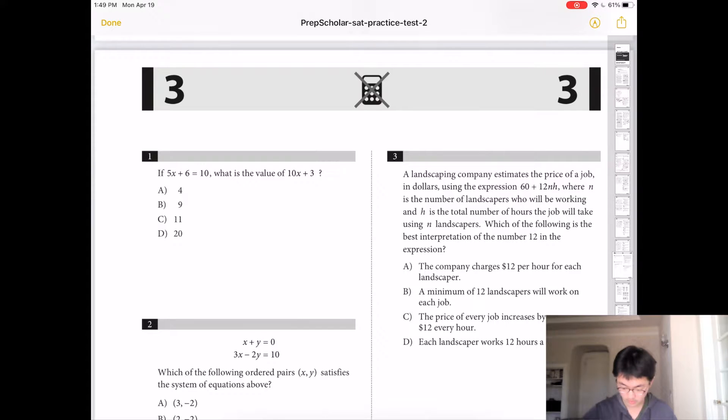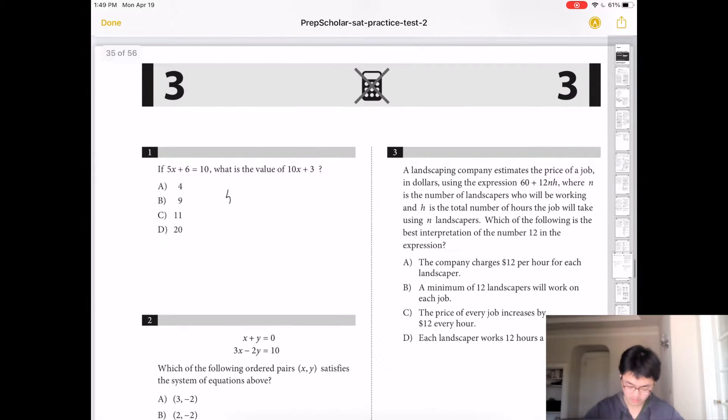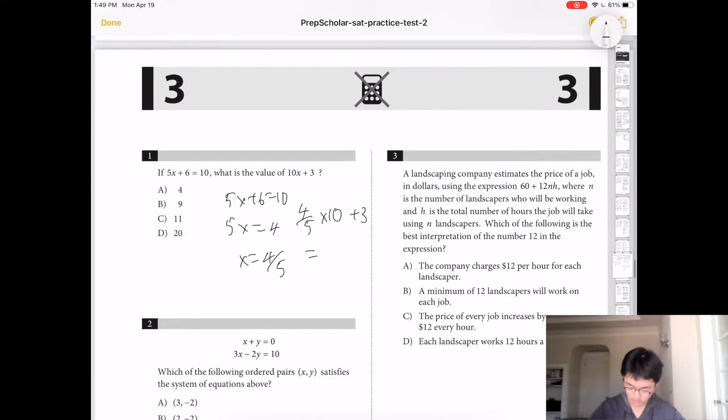If 5x plus 6 equals 10, what is the value of 10x plus 3? So if 5x plus 6 equals 10, then 5x would equal 4, so x would be 4 fifths. So you just got to do 4 fifths times 10 plus 3, which is 8 plus 3, which is 11. So the answer is C.